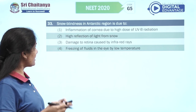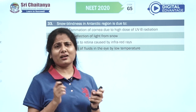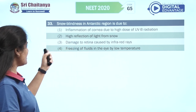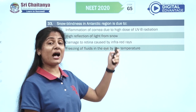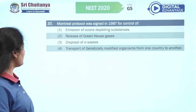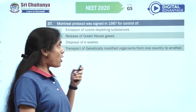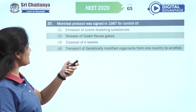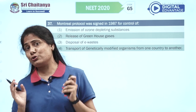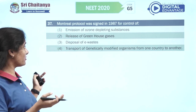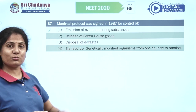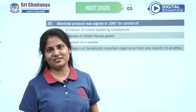Snow blindness in the Antarctic region is due to — another easy straight NCERT line question. It is basically inflammation of the cornea due to high dose of UVB radiation. Montreal Protocol was signed in 1987 for the control of emission of ozone-depleting substances — not the Kyoto Protocol, which deals with greenhouse gases. Option: Montreal Protocol from your environmental issues chapter.